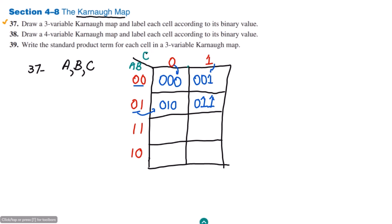Continuing: the row AB=11 with C=0 gives 110, and with C=1 gives 111. Then row AB=10 with C=0 gives 100, and AB=10 with C=1 gives 101. These are all the binary cell entries for the three-variable Karnaugh map. I think that's enough for today; in the upcoming video we will cover problems 38 and 39. Till then, take care and I will see you soon.